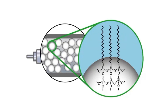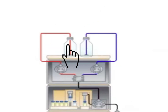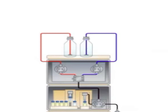The components are eluted in order of decreasing polarity. The mobile phase used in reversed-phase chromatography is typically a mixture of water and an organic solvent, such as acetonitrile. Depending on the sample, the mobile phase can remain a constant ratio of water and organic solvent, known as an isocratic mode.